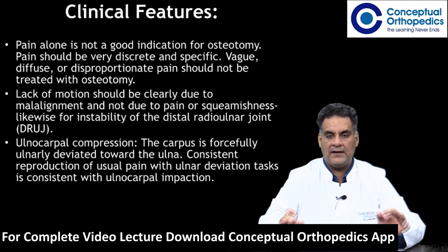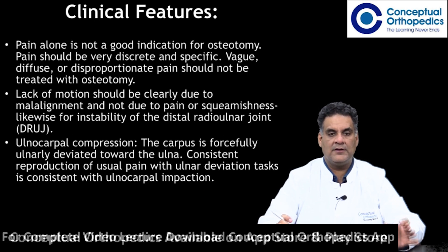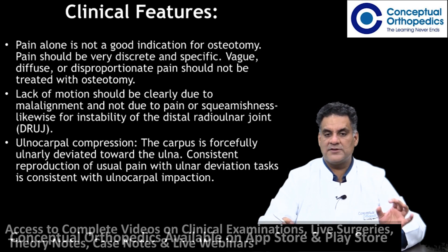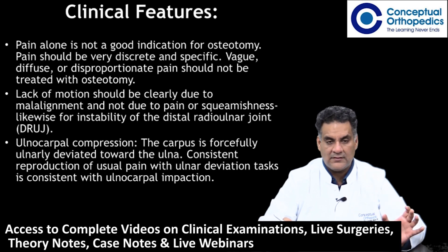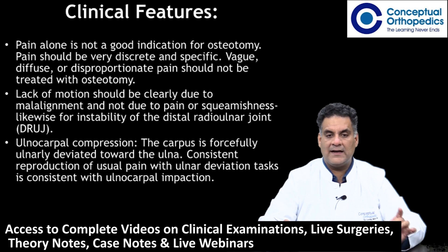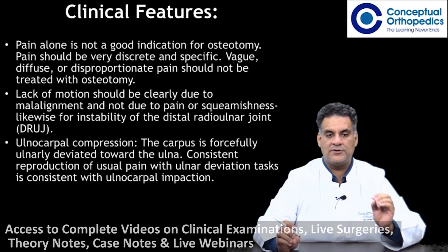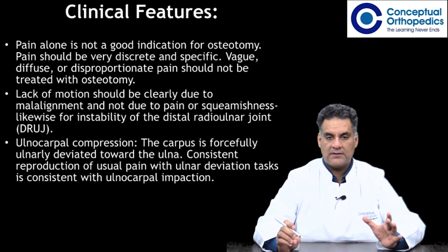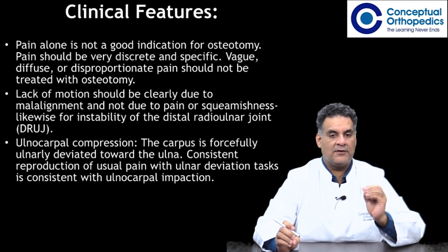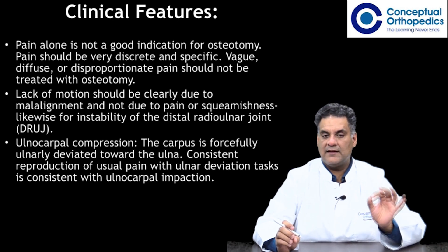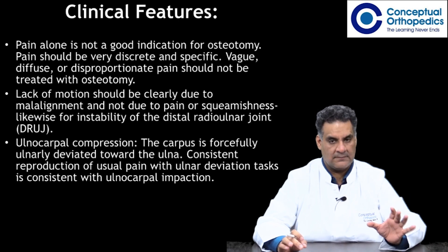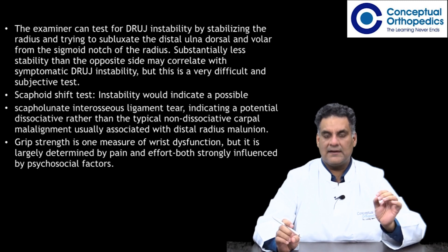Pain alone is not a good indication for corrective osteotomy. Pain should be discrete and specific; vague, diffuse, or disproportionate pain should not be treated with osteotomy. Lack of motion should be clearly due to malunion and not due to pain. Instability of the distal radioulnar joint and ulnocarpal compression — where the carpus is forcefully deviated toward the ulna — should also be assessed.